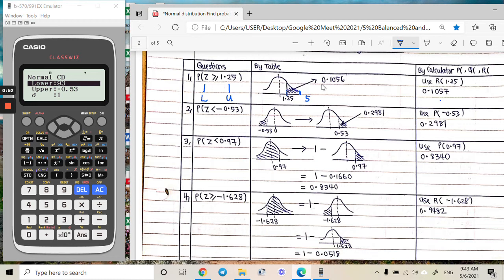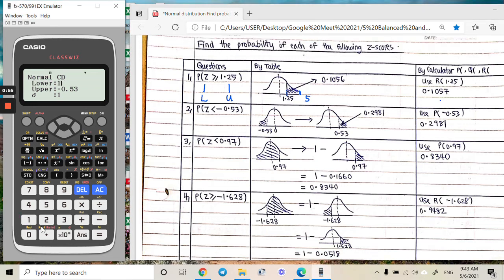Looking at this graph, lower will be 1.25, and upper you simply put one big number, for example 5 is already enough. Press lower 1.25, upper 5, then equal. Your answer is 0.1056943.